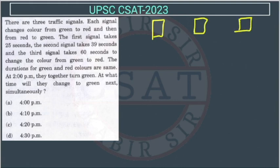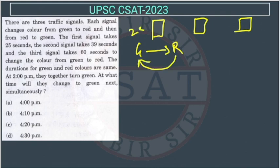So they are changing color from green to red and then from red to green. The first signal takes 25 seconds, this one takes 25 seconds. The second signal takes 39 seconds and the third signal takes 60 seconds to change color from green to red. The duration for green and red color are the same. At 2 PM they together turn green.